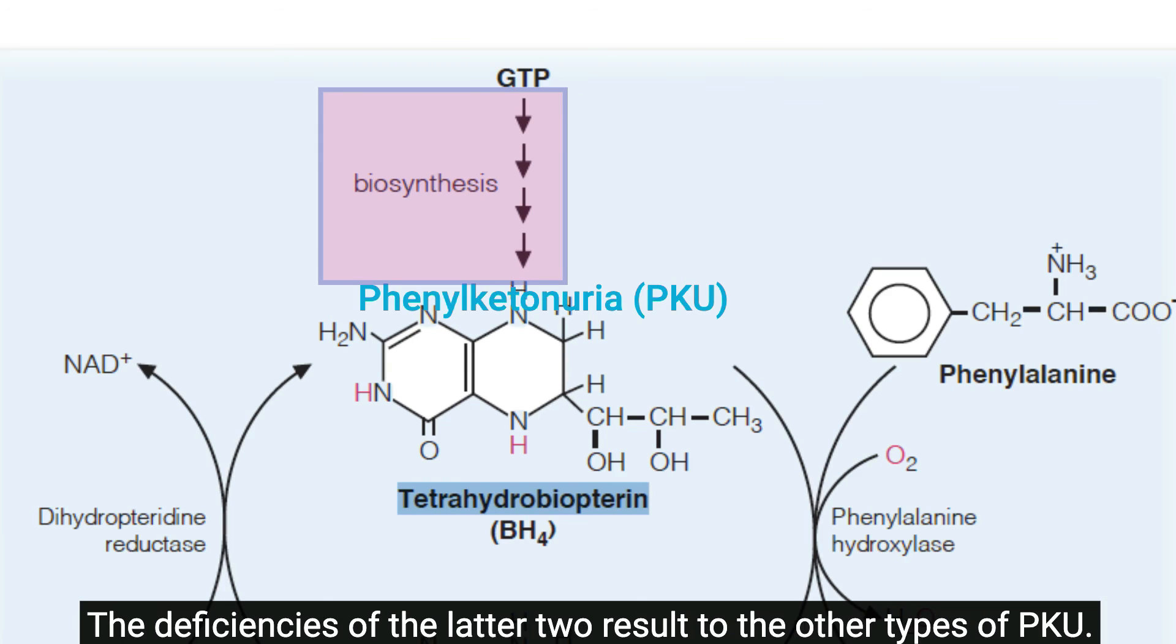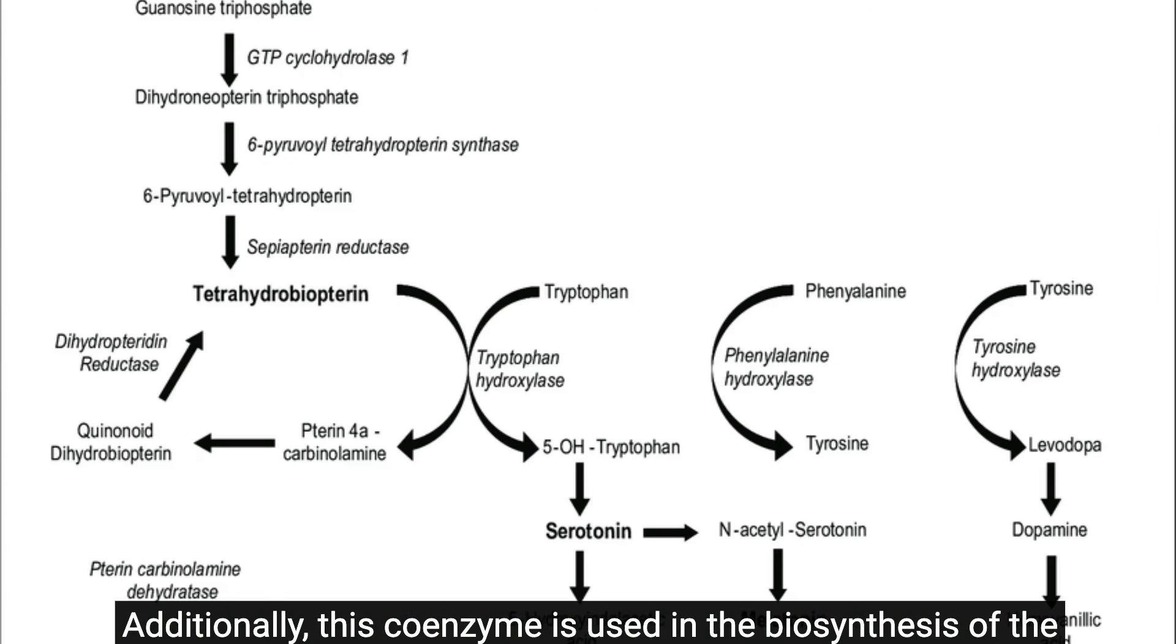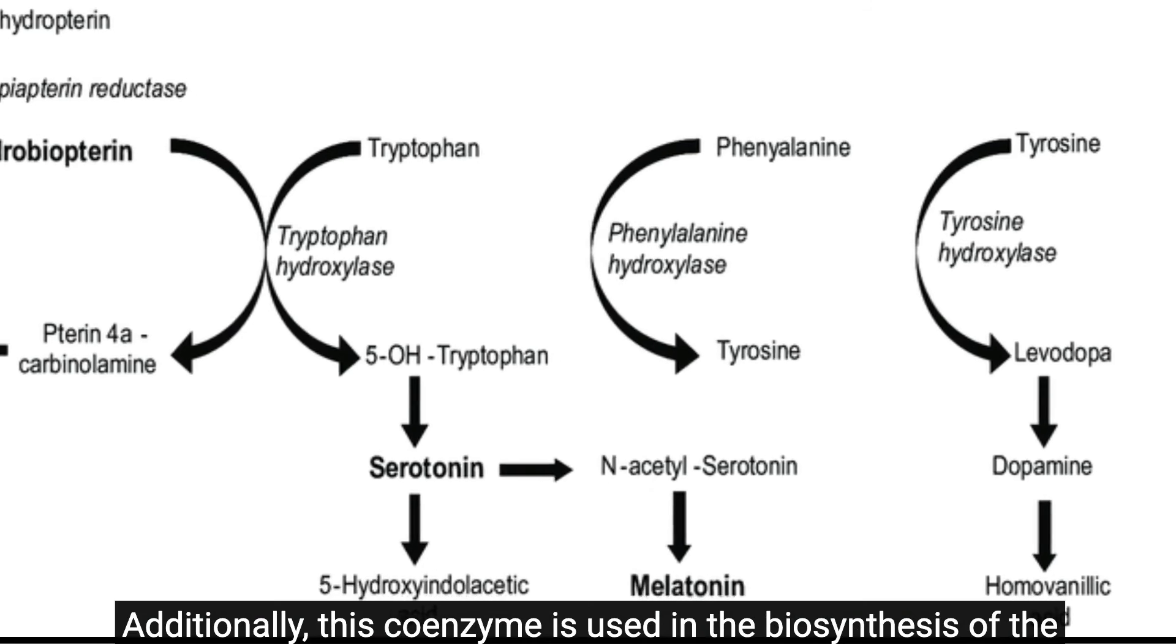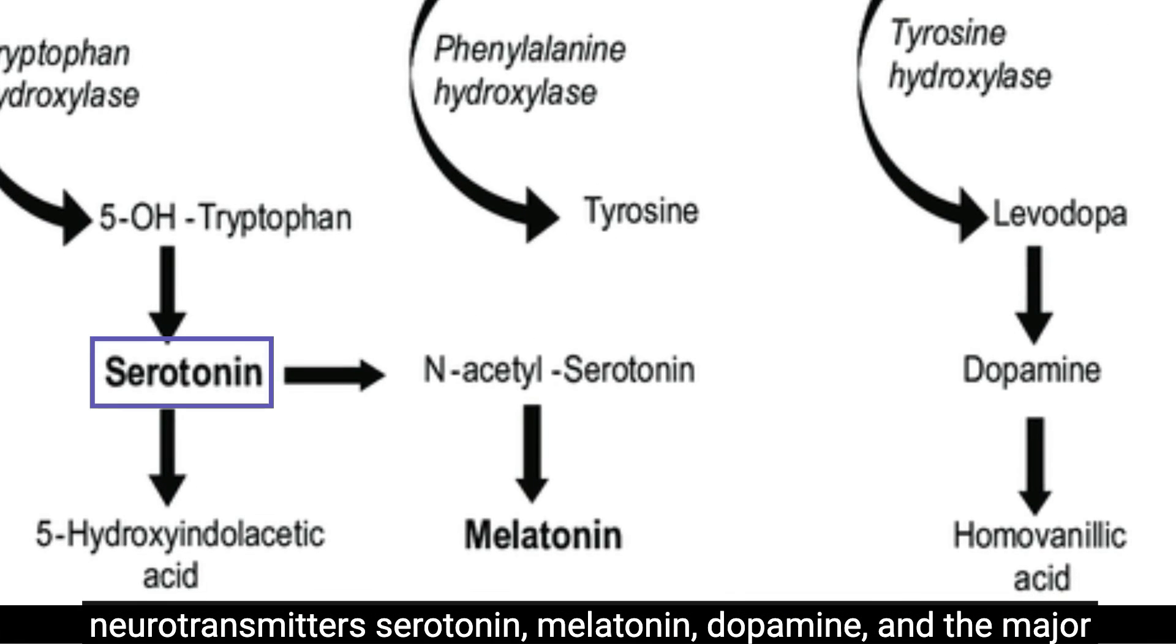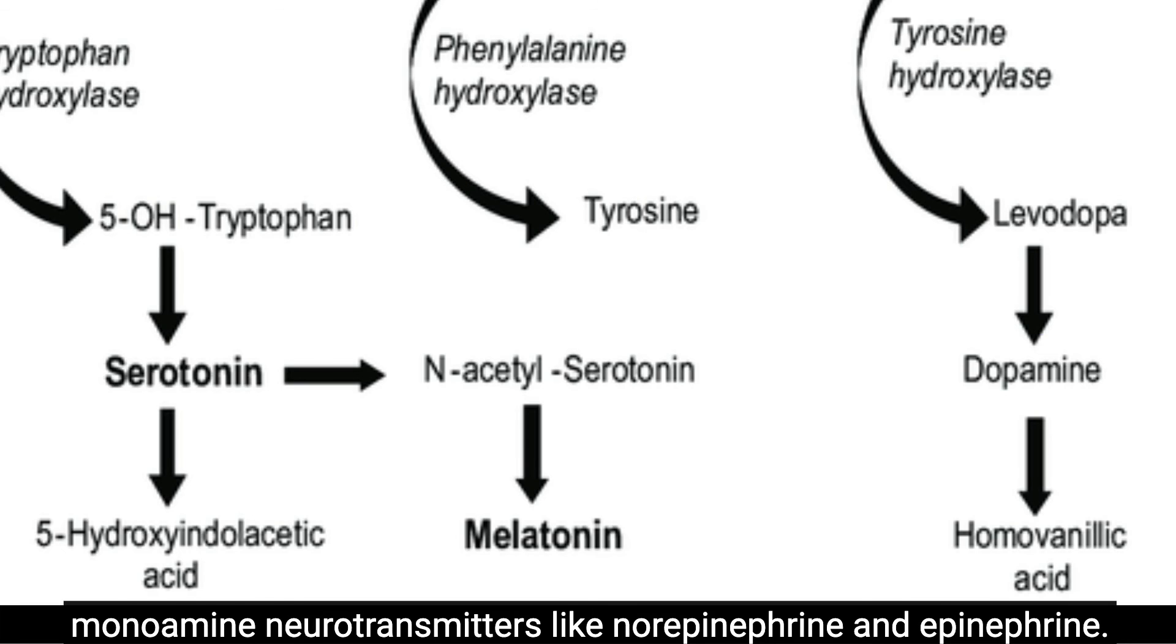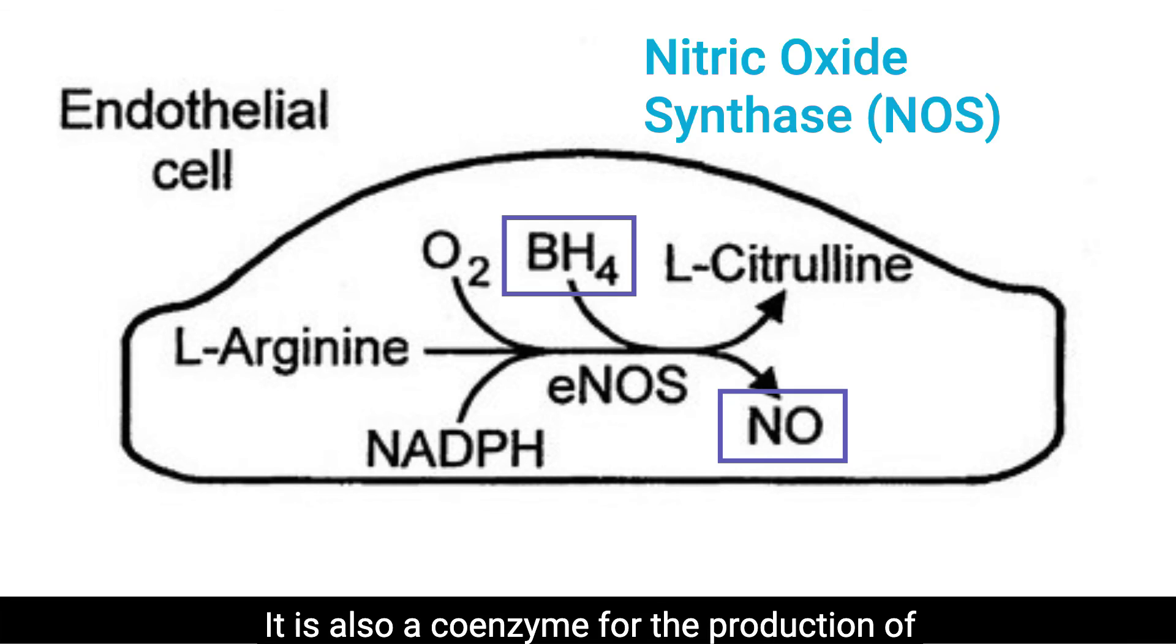Additionally, this coenzyme is used in the biosynthesis of the neurotransmitters serotonin, melatonin, dopamine, and the major monoamine neurotransmitters like norepinephrine and epinephrine. It is also a coenzyme for the production of nitric oxide by the nitric oxide synthase.